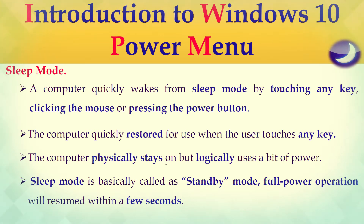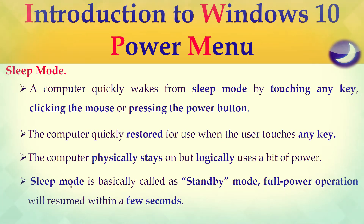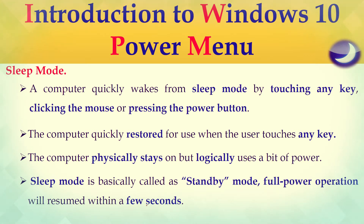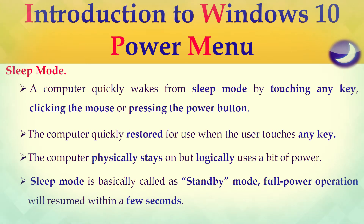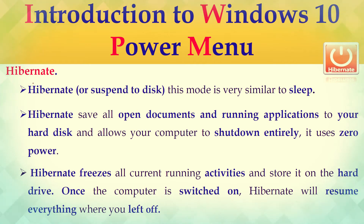Next is hibernate, also known as suspend to disk. This mode is very similar to sleep. The difference is that sleep holds all current running information in RAM, whereas hibernate saves all current running information to the hard disk and shuts down the computer. Hibernate uses zero power, while sleep mode uses a minimum amount of power. Hibernate saves all open documents and current running applications to your hard disk and allows your computer to shut down entirely.